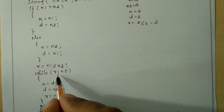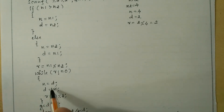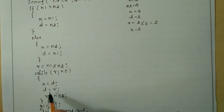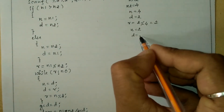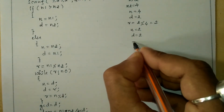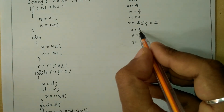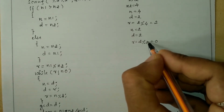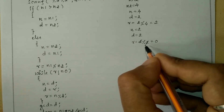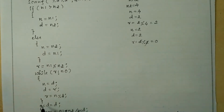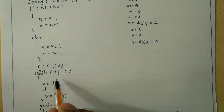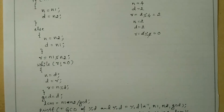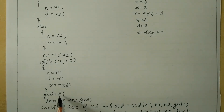Next we go to the while loop and check r not equal to zero. r is 2, which is not equal to zero, so condition is true. The three assignments take place: n = d = 2, d = r = 2, then r = n % d = 2 % 2 = 0. Since the remainder is zero, control transfers back to the while loop but r equals zero, so the condition fails and control comes out of the loop.